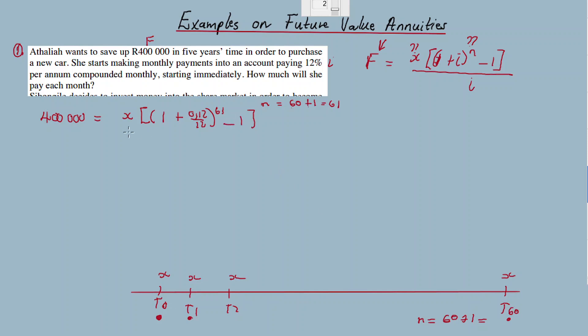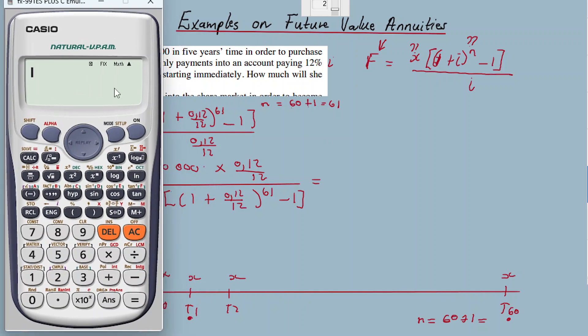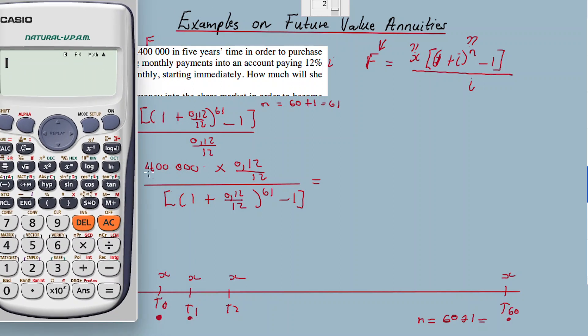Minus one, everything divided by 0.12 over 12. So X will equal, if I manipulate the equation, I cross multiply and then divide by this bracket. So if I want to make X the subject of the formula, X equals 400,000 times 0.12 over 12 divided by one plus 0.12 over 12 to the power 61 minus one.